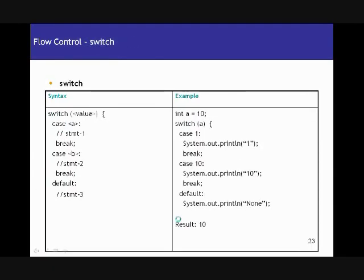Next is the switch statement, which is somewhat similar to the if statement. You give a value in the switch statement, and what you have in the cases is basically a list of potential results to match that value. If the value matches case A, those statements execute. If it matches case B, that set of statements executes. There is also a default, similar to else — if none of the cases match, the default executes.